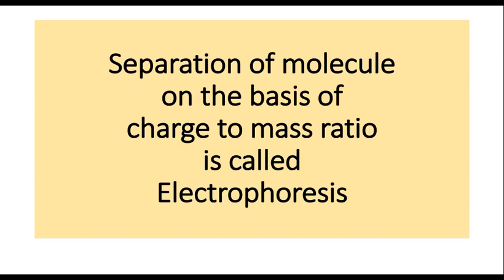So, separation of particles on the basis of charge to mass ratio is called electrophoresis. Separation happens due to two important properties: one, how much charge a particle has; and two, the mass of the particle. Combining both of these, separation occurs, and the process of separating molecules in a current field is called electrophoresis. Separation of molecules on the basis of charge to mass ratio is called electrophoresis.